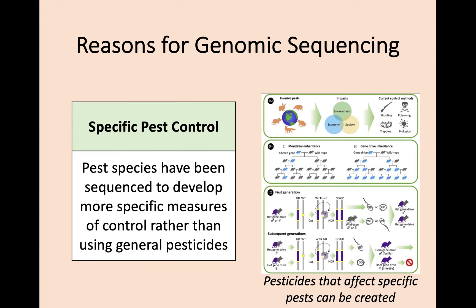A second use for genomic sequencing is creating specific pesticides. You may remember from National 5 that pesticides are used to kill organisms that are destroying your crops, but rather than just wiping out all the insects in a field, you can use the genome of that pest species to create a pesticide that would only affect that species and nothing else.